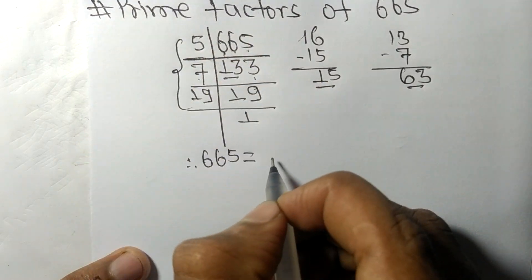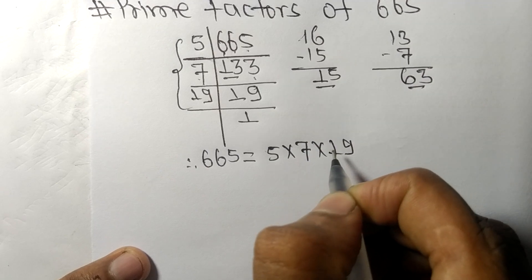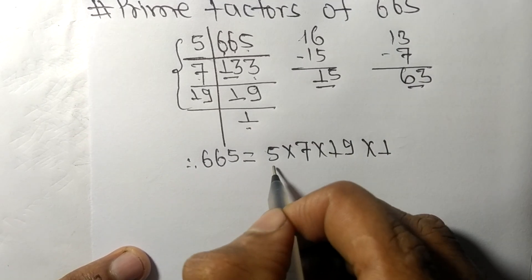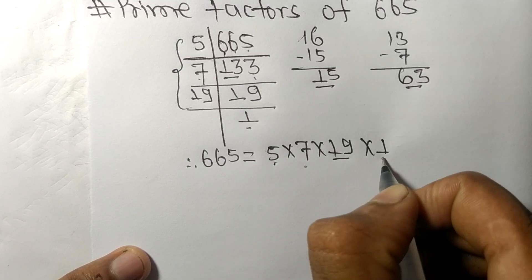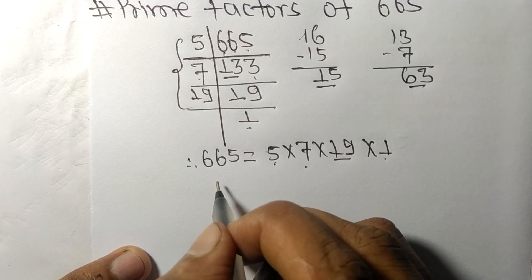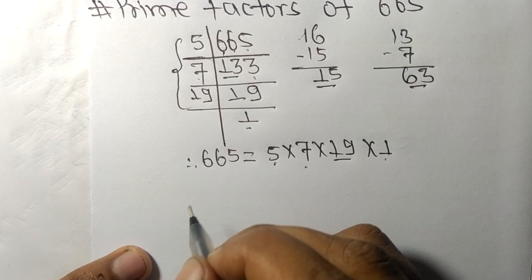From this side it is 5 times 7 times 19, and from here it is 1. So 5, 7, 19, and 1 are the prime factors of 665. So this much for today and thanks for watching.